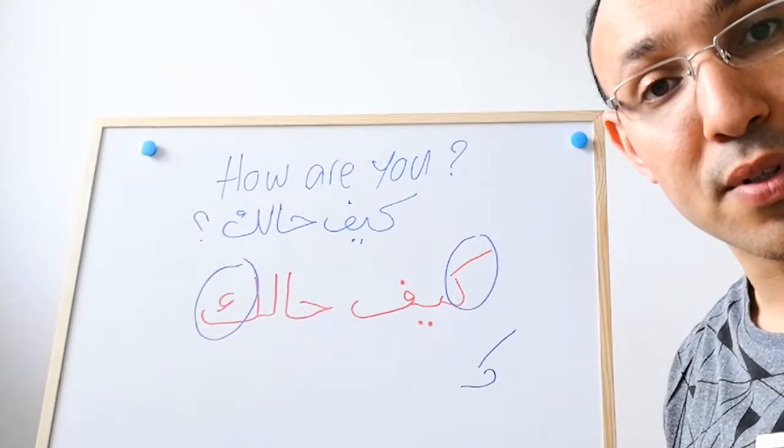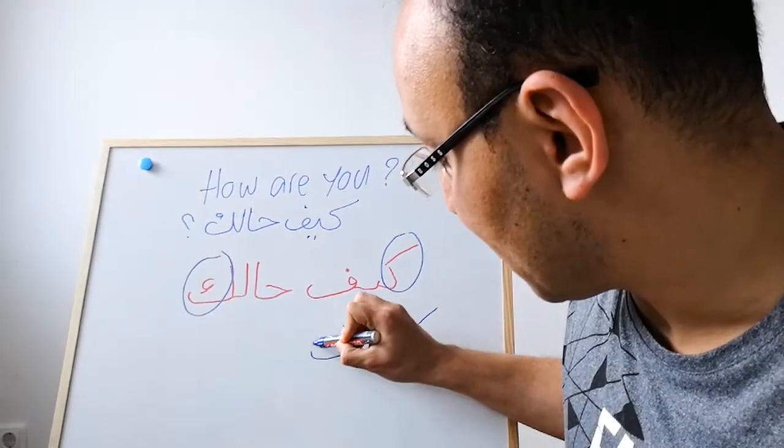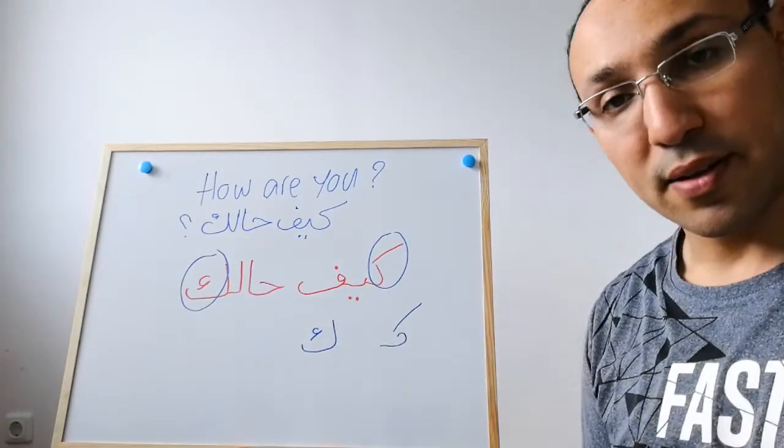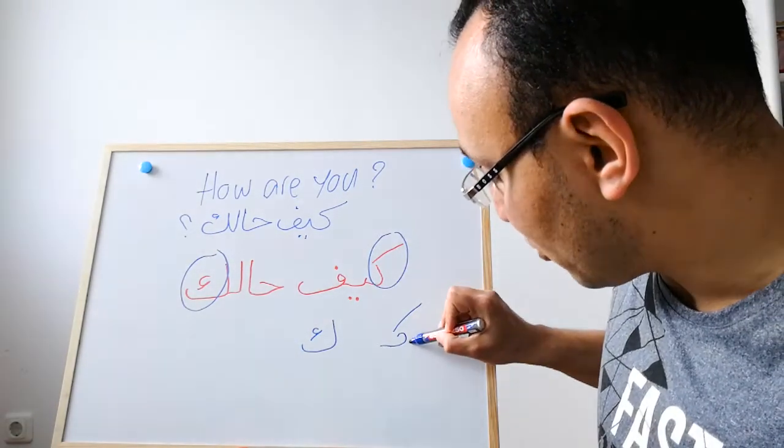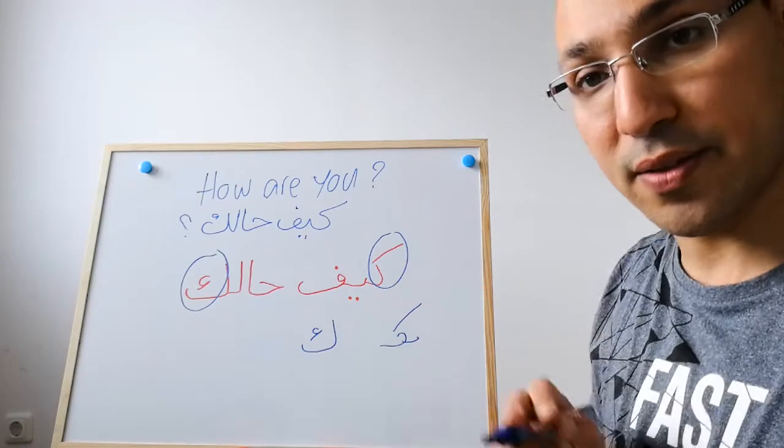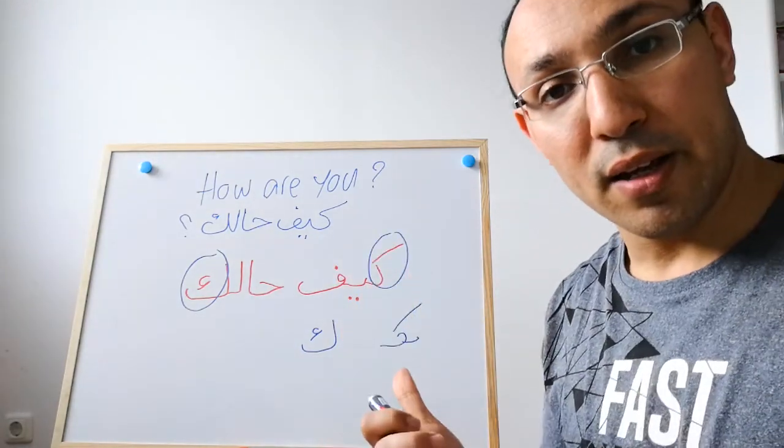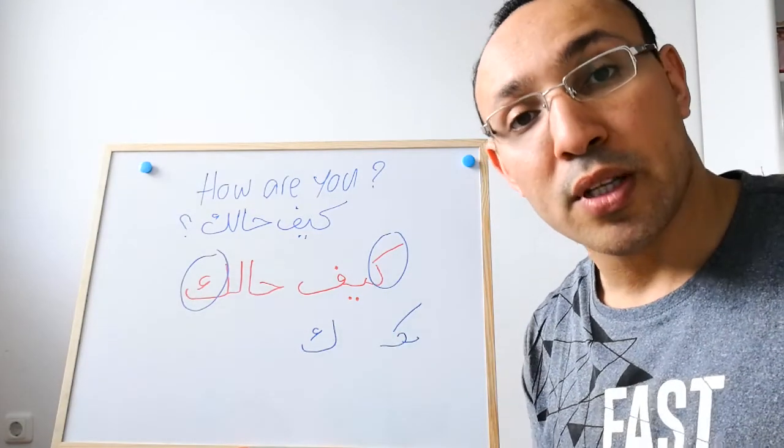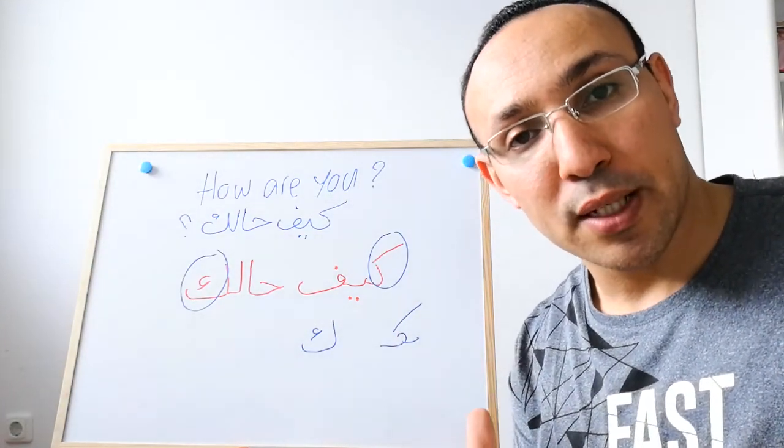But if it comes at the end of the word, it becomes like this. Also, when it comes in the middle, it can be connected with other letters like this. So whether at the beginning, middle, or end of the word, it can show different forms.